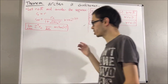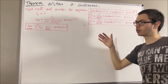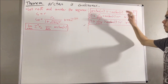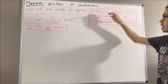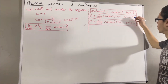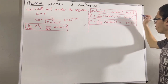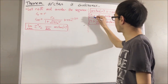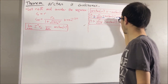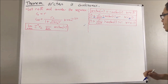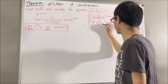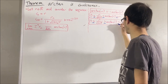We also know that the arctangent of 0 is 0, which means if R is 0, then all of these are equal to 0. So if R is greater than or equal to 0, these become weak inequalities. Similarly, if R is less than or equal to 0, all of these become weak inequalities.